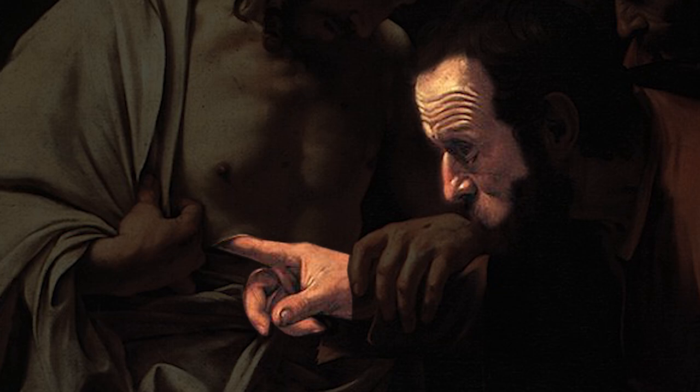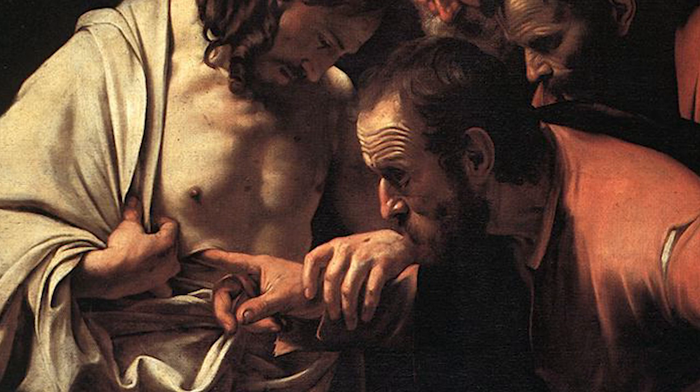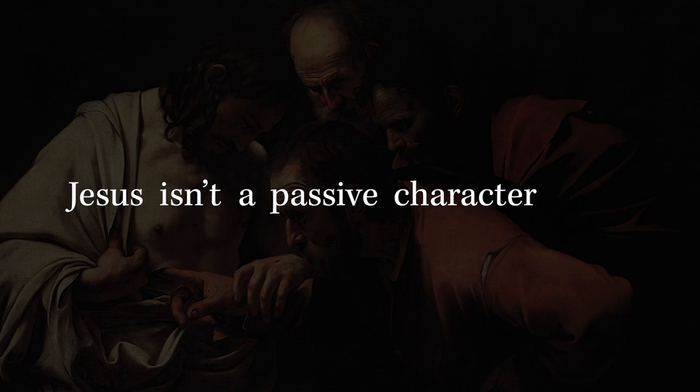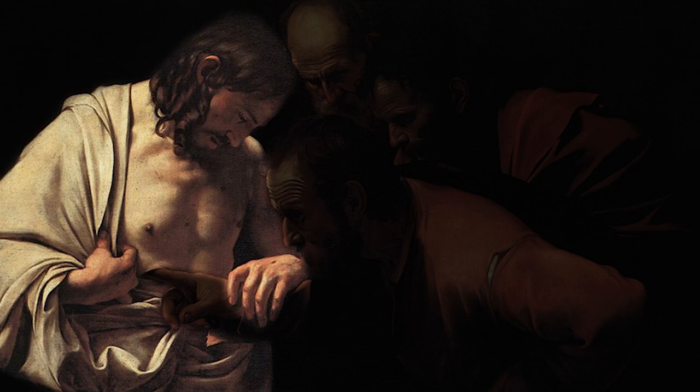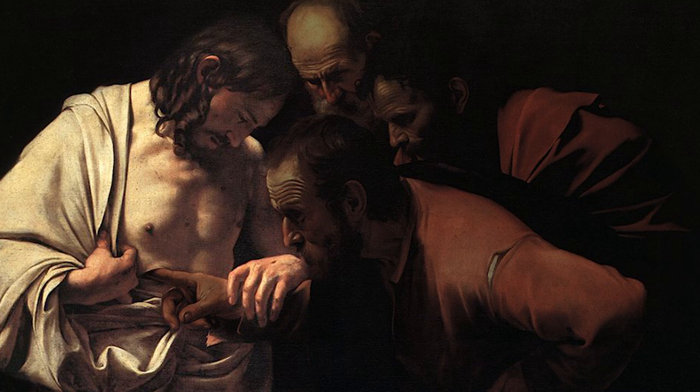As our gaze moves from Thomas' face to his finger, we see the hand of Christ guiding his finger into the wound. Jesus isn't a passive character here, presenting himself for inspection or being tested by his own disciple. Rather, he is the one in control, appearing before Thomas and pulling him into the mystery of his death and resurrection. And as we look between Thomas' gaping expression and Christ's gaping wound, our eyes must pass over the hand of Jesus.